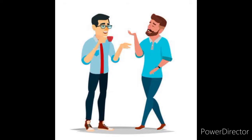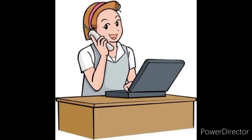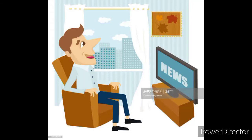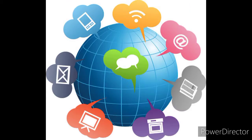Communication: obtaining or sending various types of information is called communication. In this picture, you can see a girl talking on the phone, a man reading the newspaper, and a boy watching the news. They are actually getting some information — getting to know something new. So all these are means of communication.